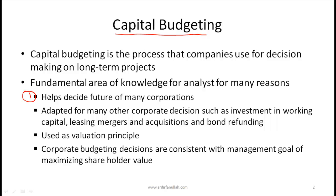Capital budgeting is used by companies and helps them decide the future of many corporations. Through capital budgeting decisions, companies decide what projects to do and what projects not to do, which in turn indicates what direction a corporation is moving in. It is also adapted for other corporate decisions such as investment in working capital, leasing, mergers and acquisitions, and bond refunding — all of which have applications within the corporate world.